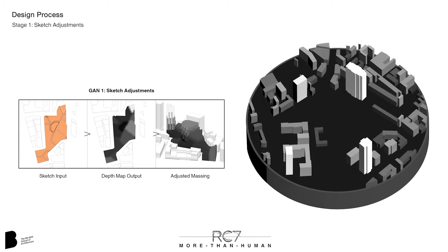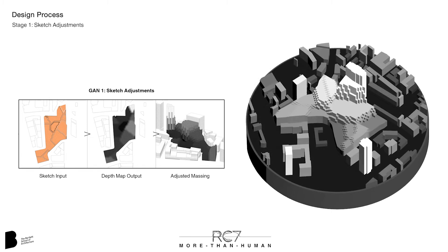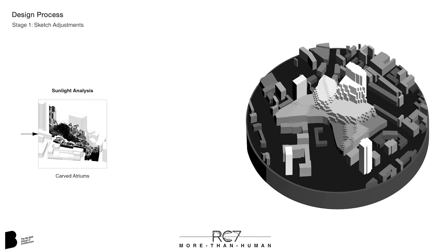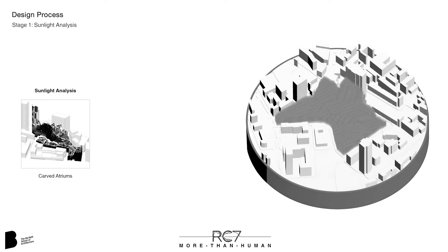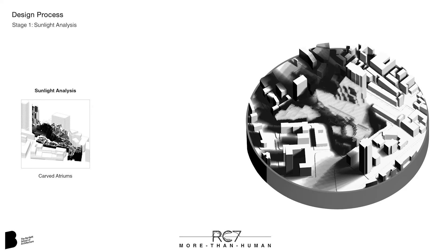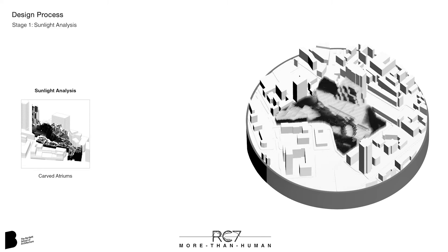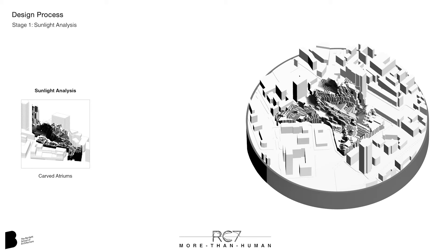This initial massing process can be repeated for any site. The final stage of massing is to analyze the sunlight reaching each point of the mass, at a range of elevations throughout the year. The level of shading of each point is averaged and represented by its color. Points that receive the most sun throughout the year are then removed, creating a series of atriums that are angled to allow maximum sunlight to enter, creating habitats throughout the scheme suited to both humans and non-humans.